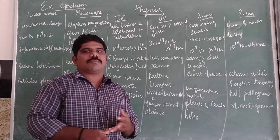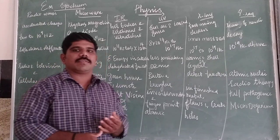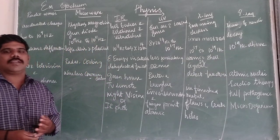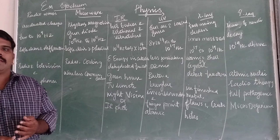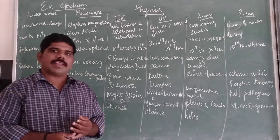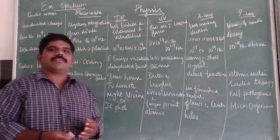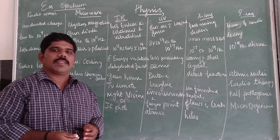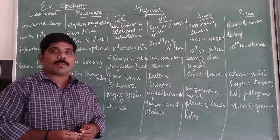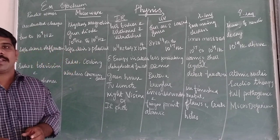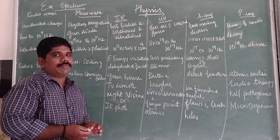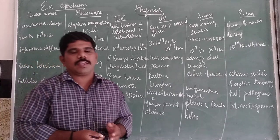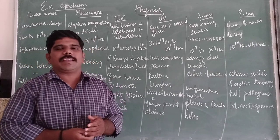The properties of electromagnetic waves: electromagnetic waves are a non-mechanical wave, which moves with a speed equal to the speed of light.